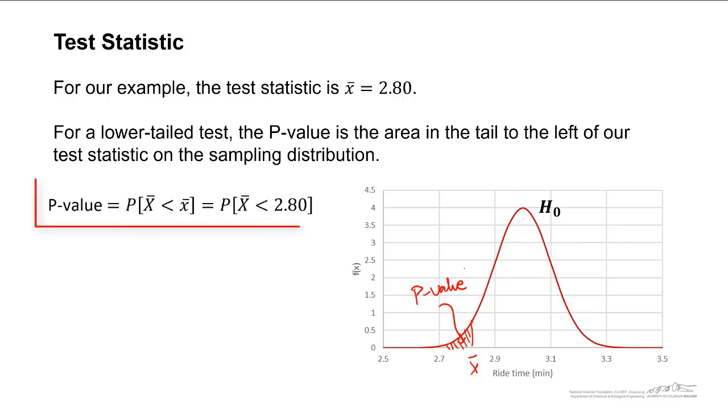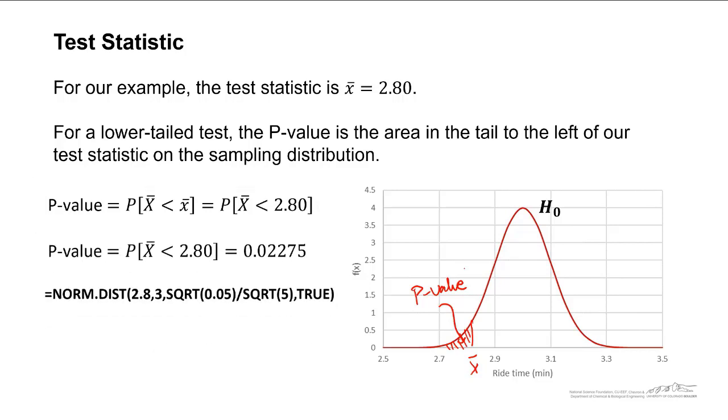In order to calculate that, the p-value is just the probability that our average is going to be less than the test statistic, and that is the 2.80 that we obtained from our sample. We can plug that in, in Excel, we can use the norm.dist function and we get that the area to the left of 2.80 underneath that sampling distribution is 0.02275.